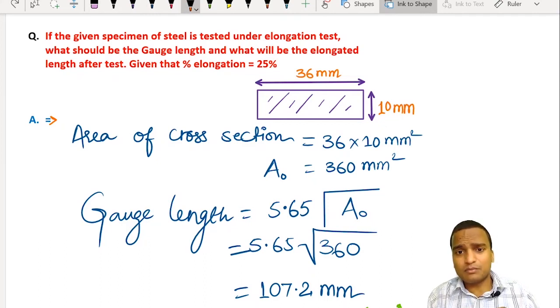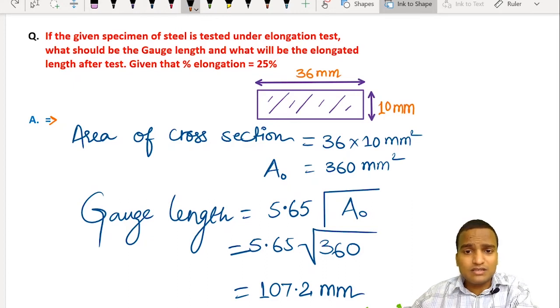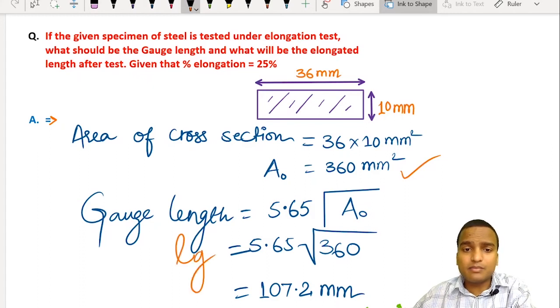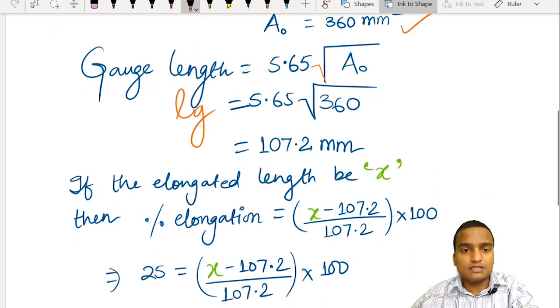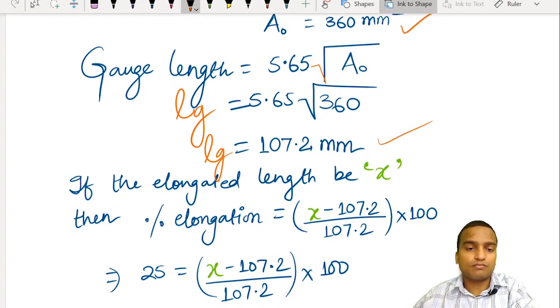Area of cross section, we have to calculate and it is equal to 360 mm square. And the gauge length Lg will be related with this area of this cross section and use it in the formula: 5.65 into root under A0. This comes out to be Lg is equal to 107.2 mm.